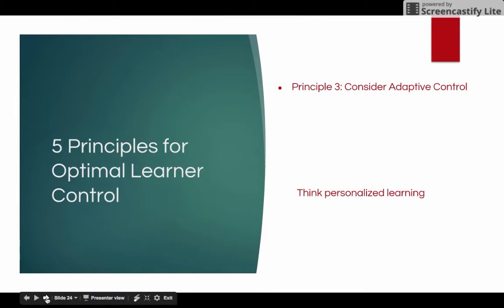Principle three, consider adaptive control. When you consider adaptive control, you get to tailor the sequence of the course based on the learner's responses to the course. I think of personalized learning. So if learner A is getting hundreds on assessments in the course, they might go a different route. Whereas learner B, if they're struggling in content, might have to go back a different route and review what has been taught.